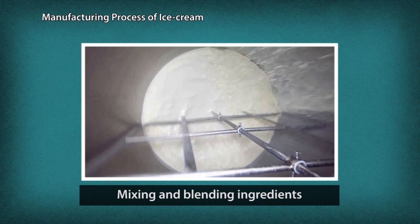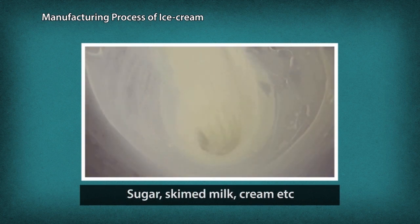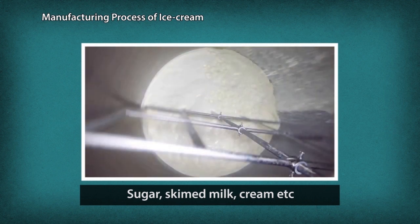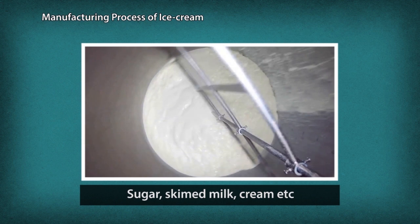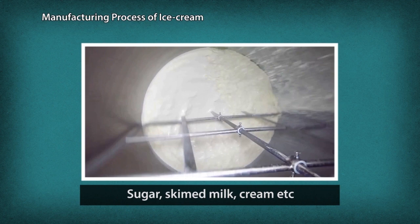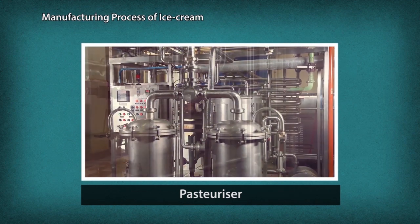The milk is mixed with ingredients like sugar, skimmed milk, cream, etc., and mixed together by churning in tanks at 60 degrees centigrade to help dissolve and prepare a pre-mix, which would be the base for the ice cream. This pre-mix is then sent to a pasteurizer.